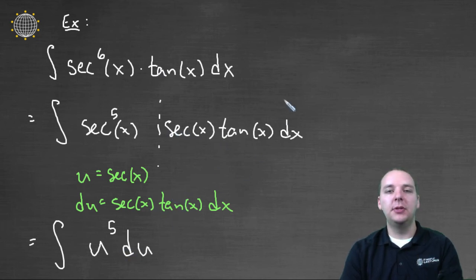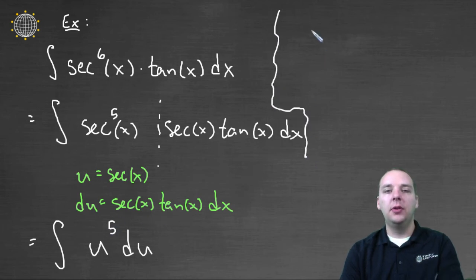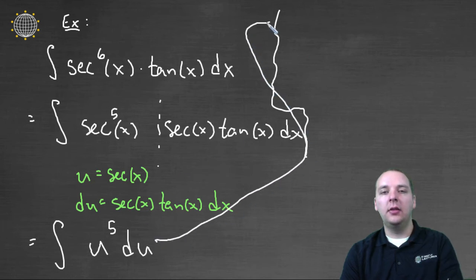Once we have this, it's pretty straightforward. As a matter of fact, I might just squeeze it up here in the corner. The integral of u to the fifth would be u to the sixth over six plus c.